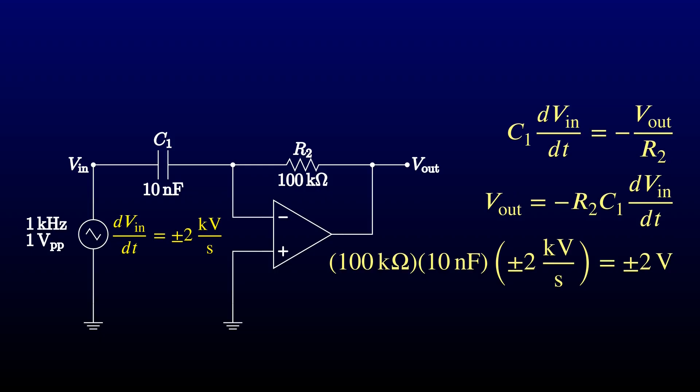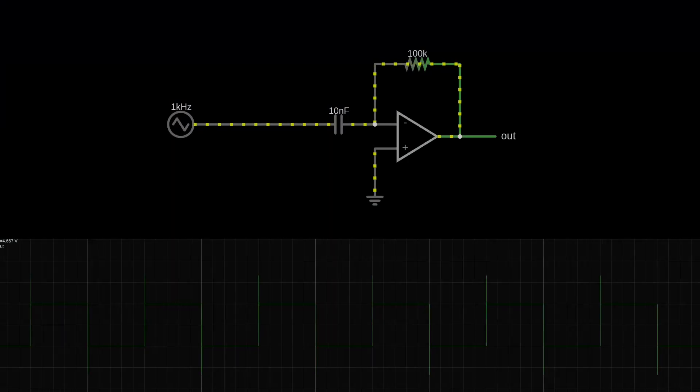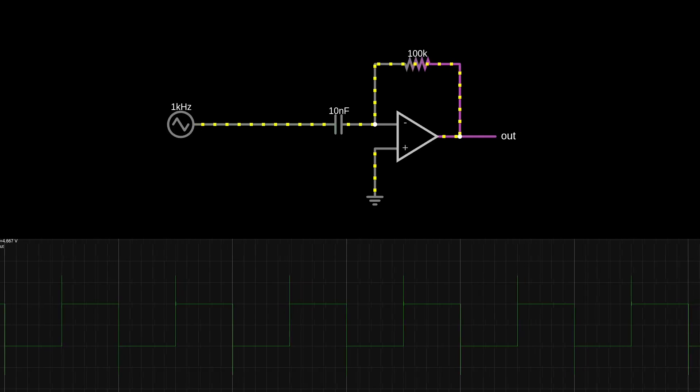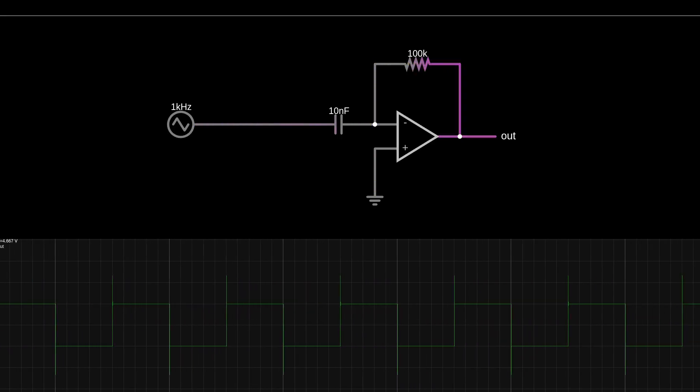So I expect to see a 4 volt peak-to-peak square wave at the output. Before we build this, let's give it a quick sanity check in CircuitJS. That looks pretty good. There's a little bit of spikiness at the transitions. That's probably got something to do with the discrete time steps that CircuitJS uses. Let's try building it.